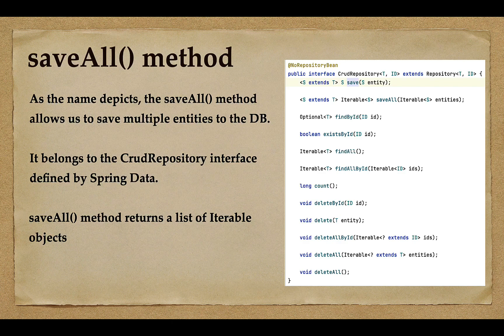Welcome back. In this lecture we'll see how to use the saveAll method to save multiple entities into the database. The saveAll method is basically from the CrudRepository interface and it returns a list of iterable objects. Whenever you have a requirement to save multiple entities into a database, you can go ahead and use the saveAll method.